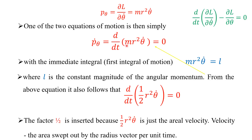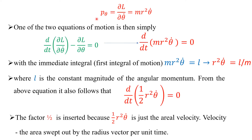From the above equation, it follows that m R-squared theta-dot equals l. Dividing both sides by m gives R-squared theta-dot equals l over m, which is another constant. So the variable R-squared theta-dot is conserved. Applying this in the Lagrangian equation confirms that ∂L/∂θ is zero since theta is ignorable, and the first integral gives m R-squared theta-dot equals l.